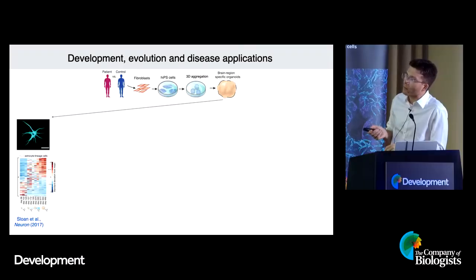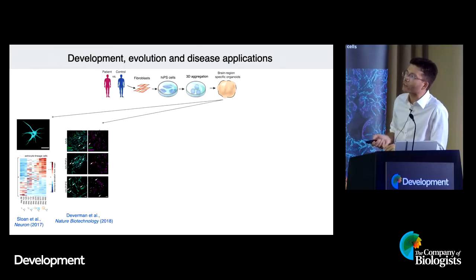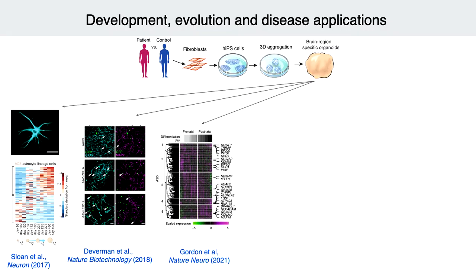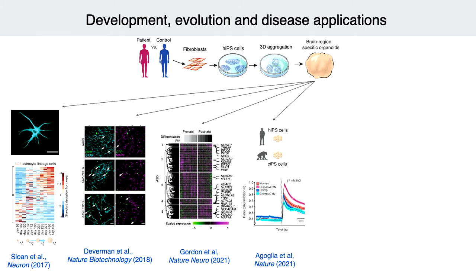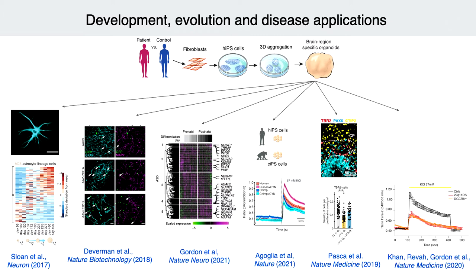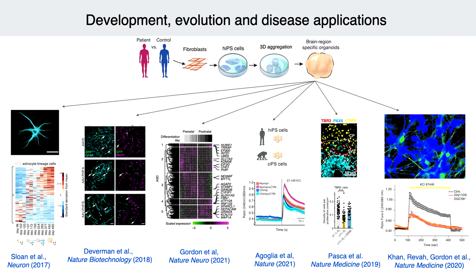We've used this relatively simple, regionalized system to study astrocyte development, identify viruses with Viviana Gradinaro's group at Caltech that infect specific cell types, map disease genes onto specific cell processes, understand evolution by building fused human-chimp cells, and build disease models for both environmental conditions such as hypoxic encephalopathy and classic genetic disorders such as 22q11 deletion syndrome.